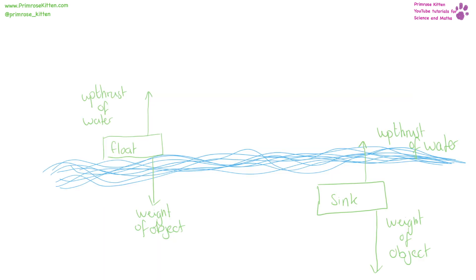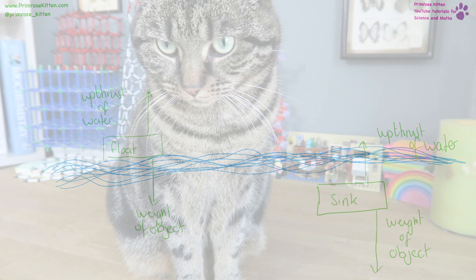An object is going to float when the forces are balanced — when the upthrust of the water is balanced against the weight of the object. But it is going to sink if the weight of the object is more than the upthrust of the water.